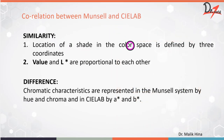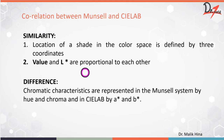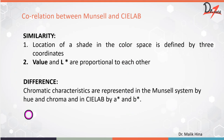Comparing the Munsell and CIE LAB systems: both have three coordinates, so the color space is described in three dimensions. The value in Munsell and the L in CIE LAB are proportional to each other, as both represent that axis going from top to bottom. The difference is that chromatic characteristics are represented in the Munsell system by hue and chroma, while in the CIE LAB system they are represented by A and B.